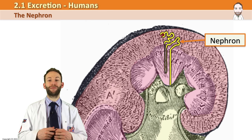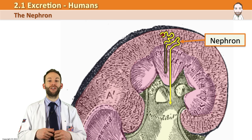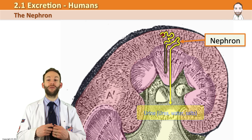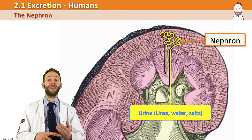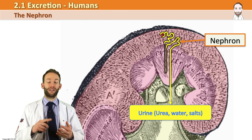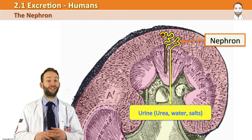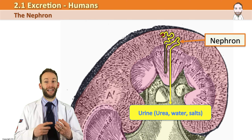By this point, at the bottom of the collecting duct, you really only want there to be urea, some water, and some salts — and that is what makes up the urine.